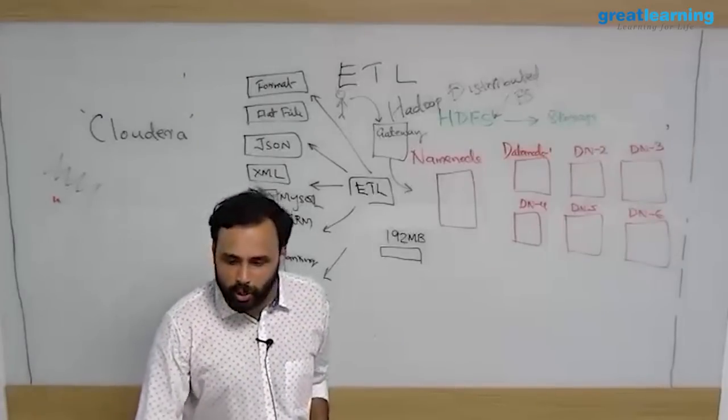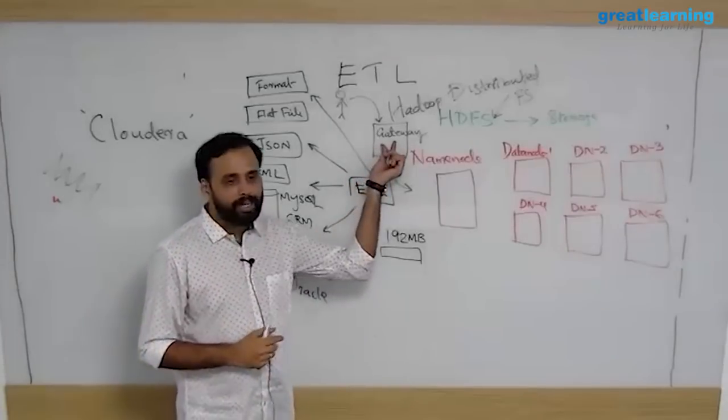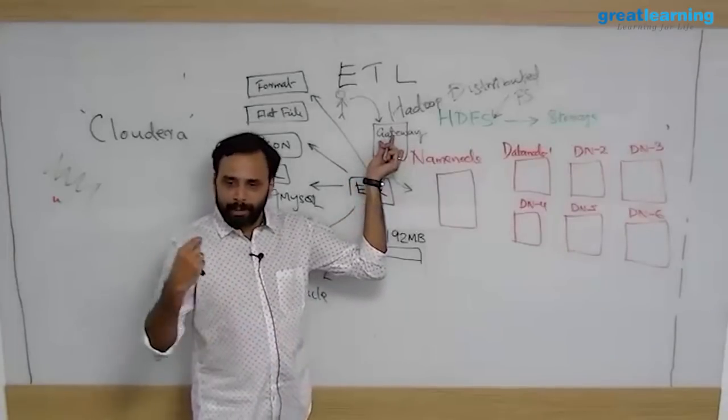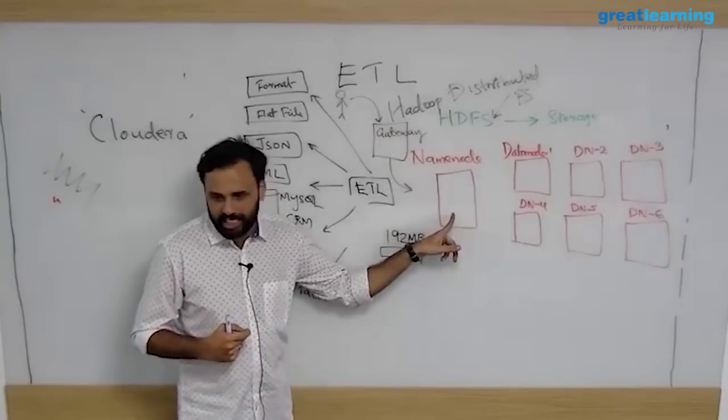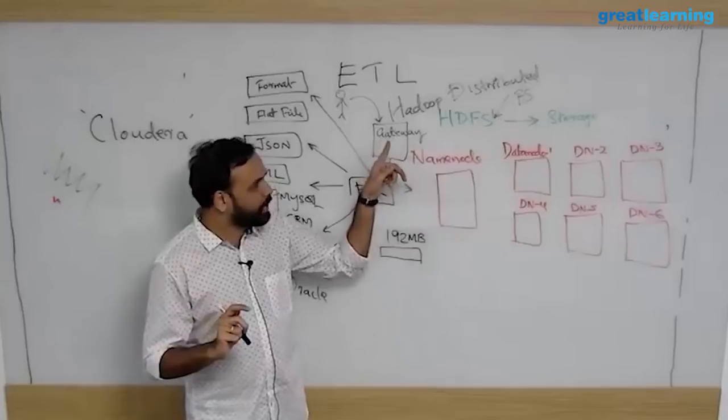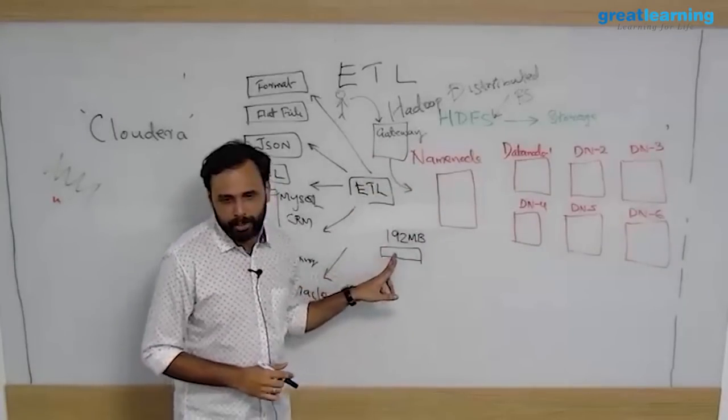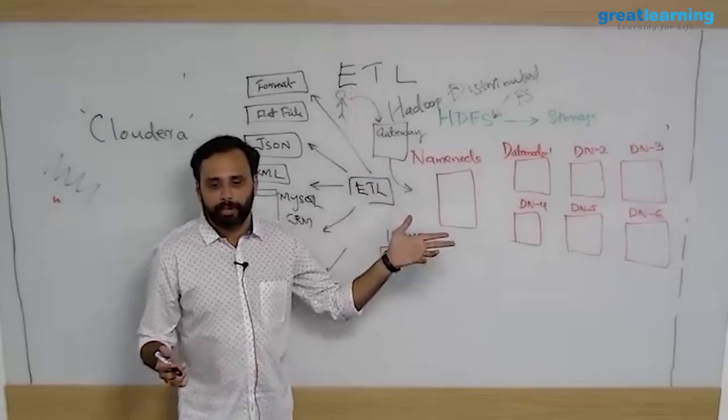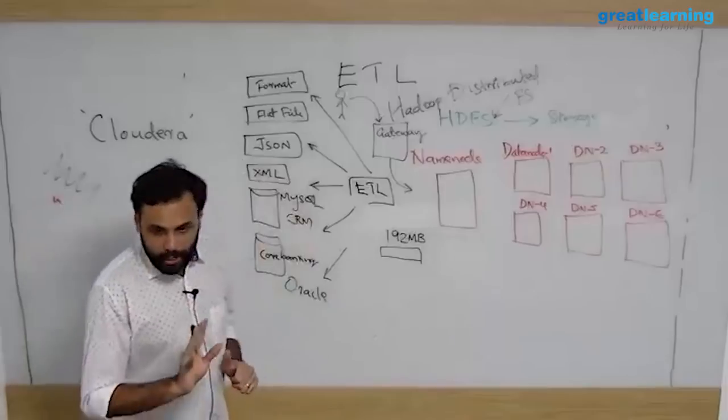For security reasons and many other reasons, companies do two things. Either they will install something called a Hadoop client, even that is very rare. What we used to do, there will be a Linux machine called gateway node. You will get a username and password, you connect to this machine. This machine will already know how to reach here. You issue the commands here, it will run here. But whatever way, let's say you want to push this 192 MB file from your machine. You connected to the gateway machine and said okay upload the data.